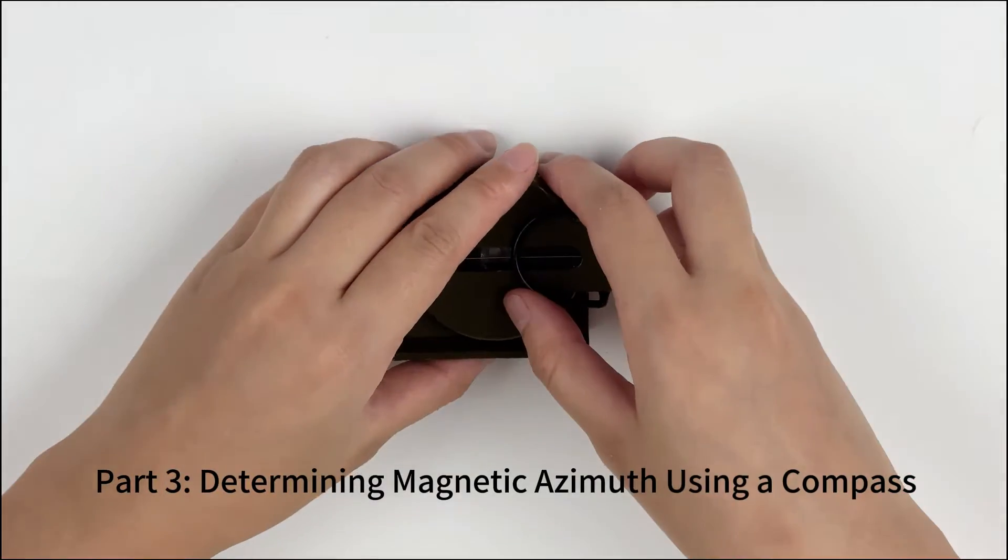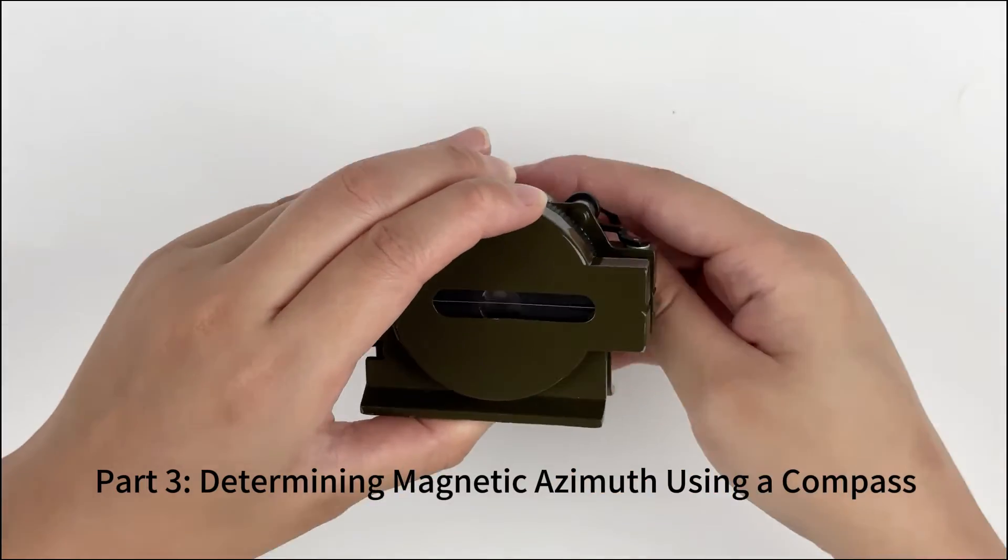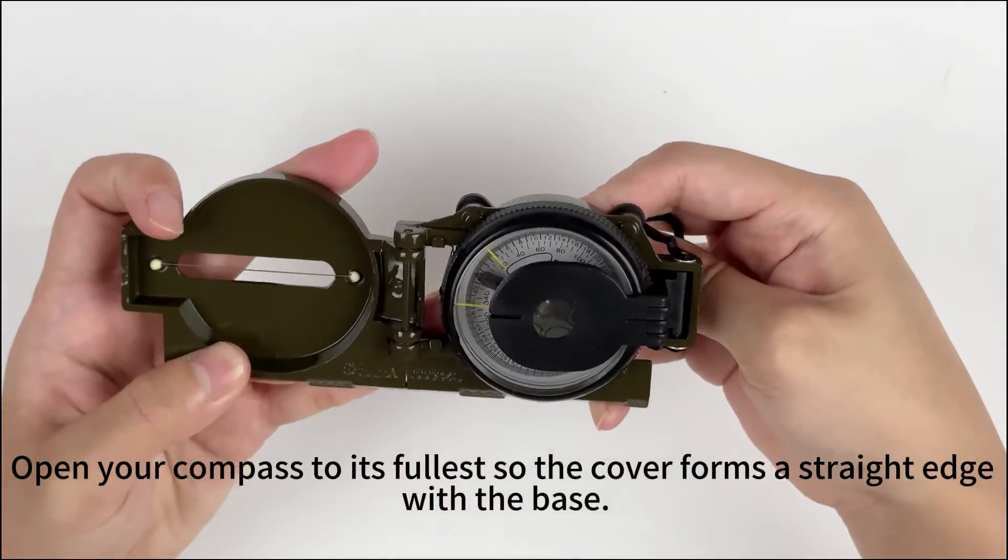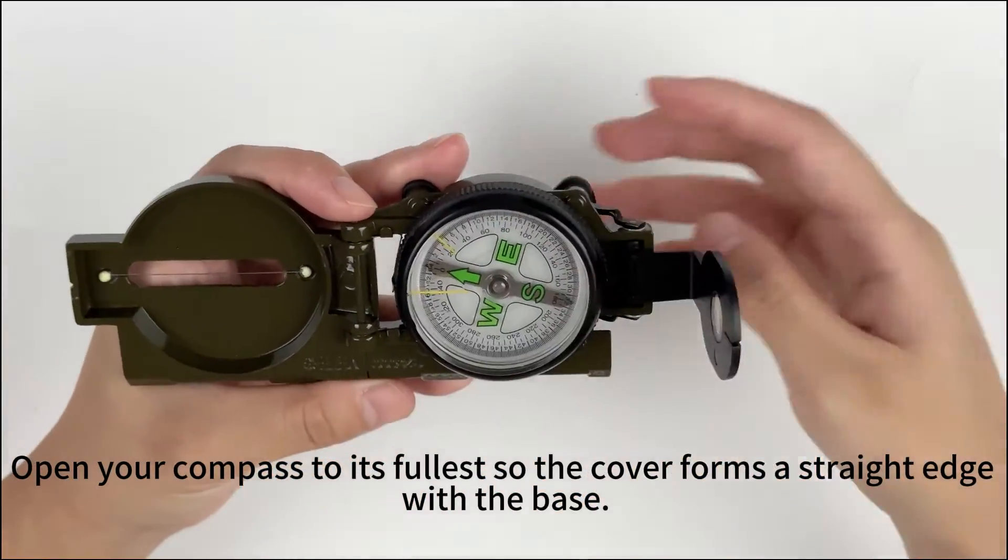Part 3: Determining magnetic azimuth using a compass. Open your compass to its fullest so the cover and forearms are straight out with the base.